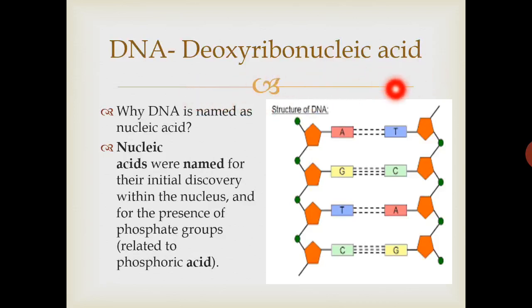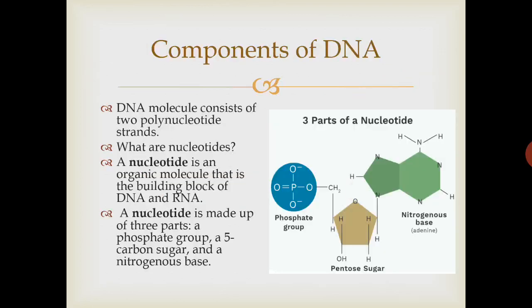Why it is called deoxyribonucleic acid? The term nucleic acid comes from its discovery. DNA was first discovered inside nucleus and it contains a phosphate group which was labeled as phosphoric acid, so it was named as nucleic acid. Nucleic acids contain DNA as well as RNA.